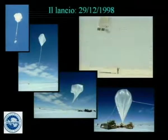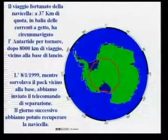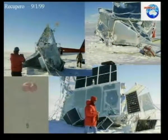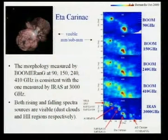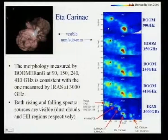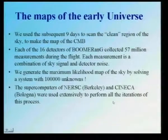After two weeks we recovered the instrument in good shape, and we also had the visit of a penguin, which was a rare event there because we were far from the coast. The first thing we tried to see was a known source — before trying to see the faint fluctuations, we looked at Eta Carinae, a wonderful region of our galaxy. We saw it, were very happy, and then used nine days of data to map the cosmic microwave background.